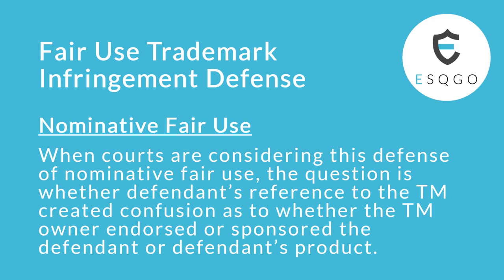Also, Amazon sellers can make the claim — which most of you are probably aware of — that your phone cases fit iPhones and Google Nexus phones. iPhone is a registered trademark, and Google Nexus is a registered trademark, so those are examples of the two branches of fair use: descriptive fair use and nominative fair use.